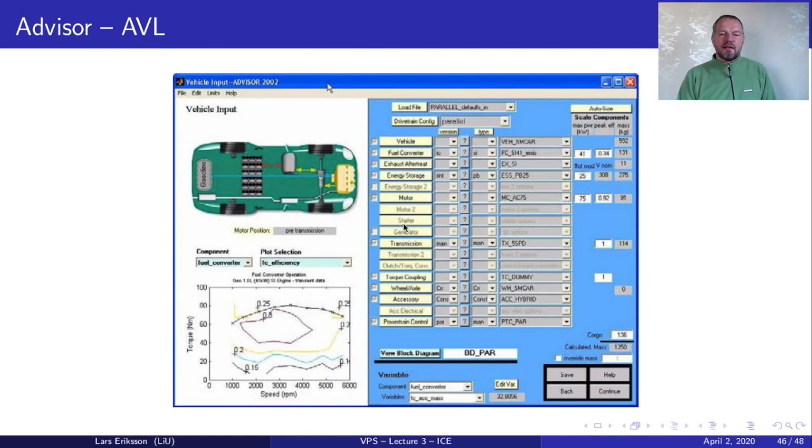Advisor from AVL has also graphical user interface and a lot of data for different components. For example, vehicle components, they have different vehicles stored. With these you get a drop-down menu and you can select vehicle, you can select engine, you can select after-treats, you can select what type of battery you have, electric machines, etc. So one of the nice things with the advisor is that you have access directly to a lot of vehicle parameters that you can use to make a lot of different evaluations. The information from AVL I will not read but you can find it on the slide.